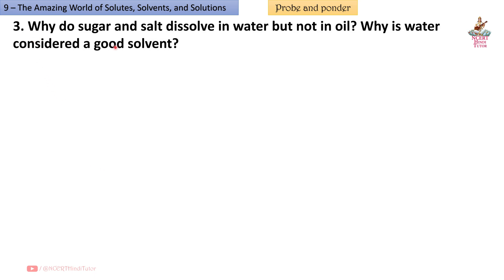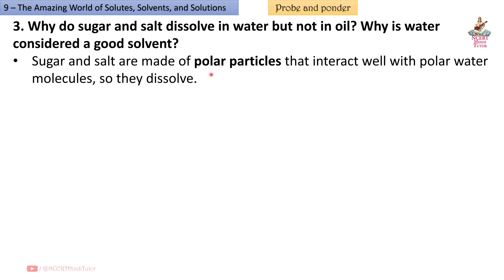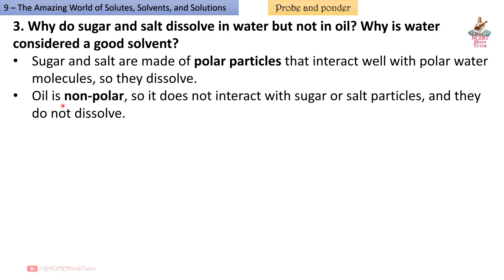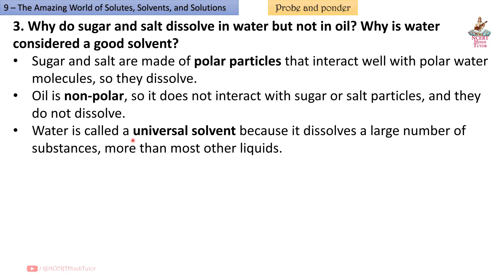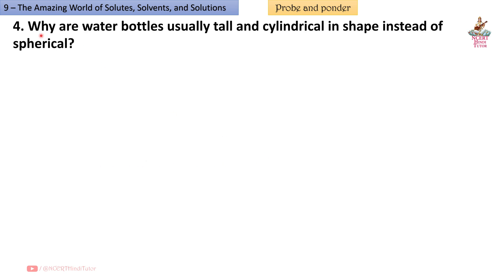Question 3: Why do sugar and salt dissolve in water but not in oil? Why is water considered a good solvent? Answer: Sugar and salt are made of polar particles that interact well with polar water molecules, so they dissolve. Oil is non-polar so it does not interact with sugar or salt particles and they do not dissolve. Water is called a universal solvent because it dissolves a large number of substances, more than most other liquids.